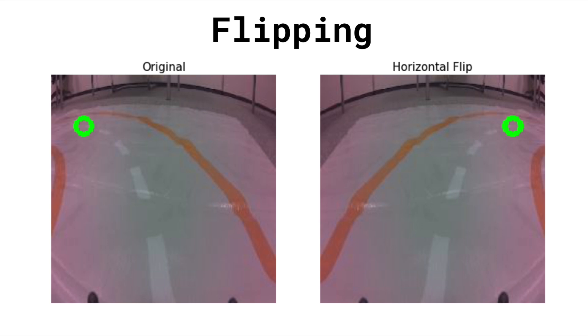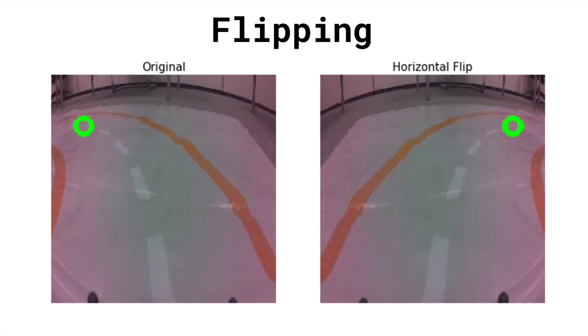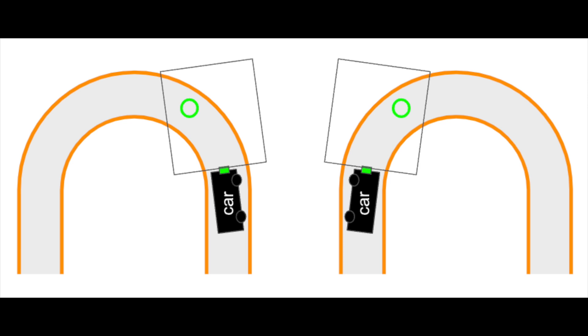The first augmentation is flipping images. Suppose we collected a bunch of images in the anti-clockwise direction — we collect left turns only. If we wanted the car to be able to make right turns, we'd have to collect a bunch more images. Alternatively, we could flip all our images on the x-axis, or do horizontal flipping. This makes sense for our application as the track is symmetrical. Even if we did collect data in both directions, it would make sense to flip all the images as it allows us to double the size of our dataset.